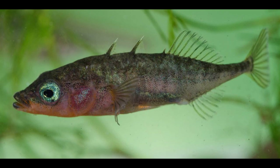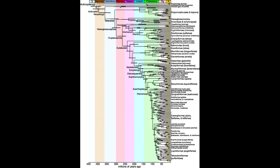Acanthomorpha is an enormous clade as it contains over 14,000 species, about one-third of all extant vertebrates. This and other Teleostei lineages underwent a dramatic diversification event in a period spanning the late Mesozoic into the early Cenozoic, which is dubbed the second age of fish in a paper by Thomas J. Near et al.